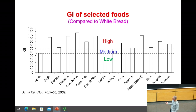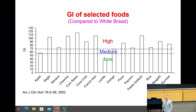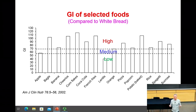Lentils are in the low range, because there's quite a bit of fiber in lentils. Orange is medium, borderline high. Pizza, popcorn, potato — if you bake it — rice, spaghetti, and table sugar are also shown here. The choice of foods you eat can drive a bigger or smaller glycemic response.